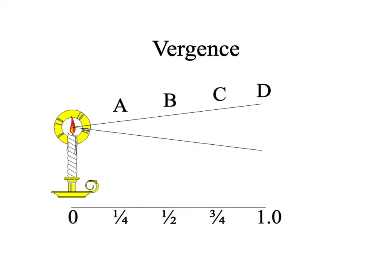Let's talk about the vergence at these different alphabet points. At point A, the rays of light converge a quarter of a meter to the left — one over a quarter meter is four, and to the left means minus, so it's minus four. At one half meter, it's minus two. At three quarters of a meter, vergence is four-thirds, which is 1.33 minus. And at one meter, as we saw, it's minus one.